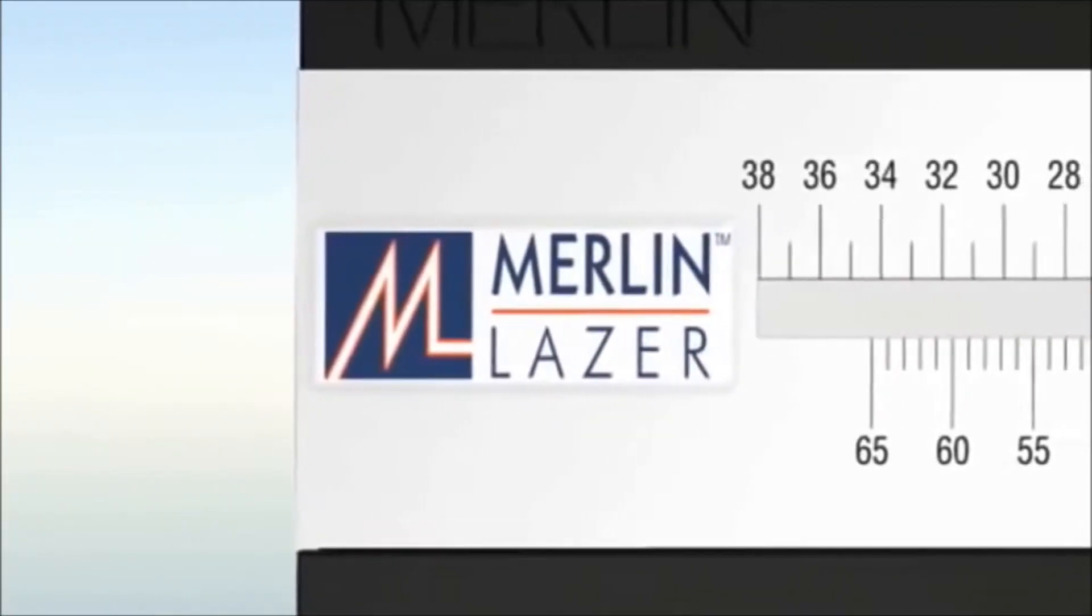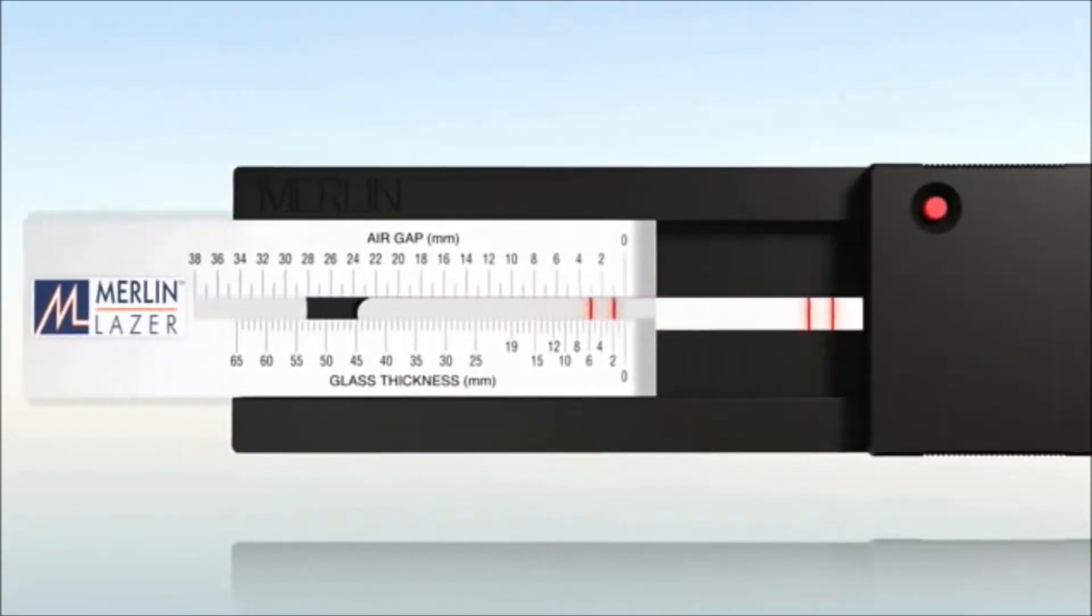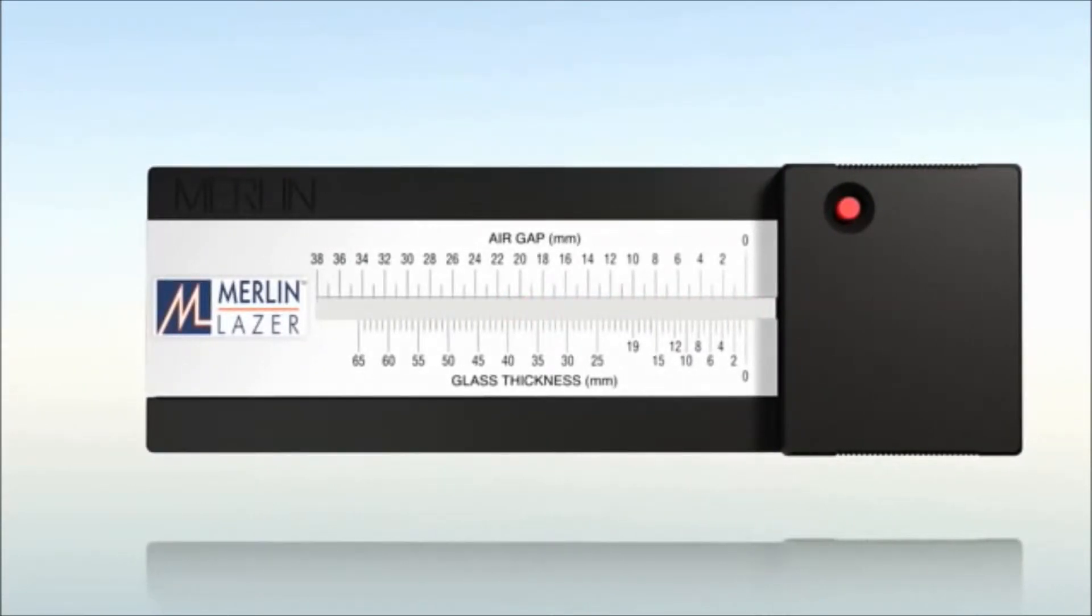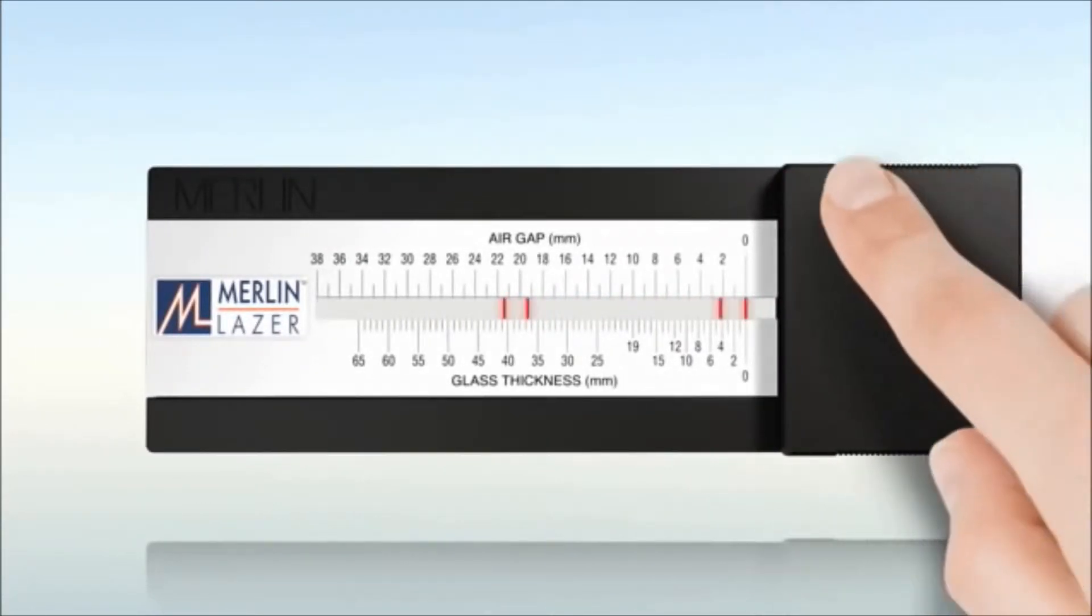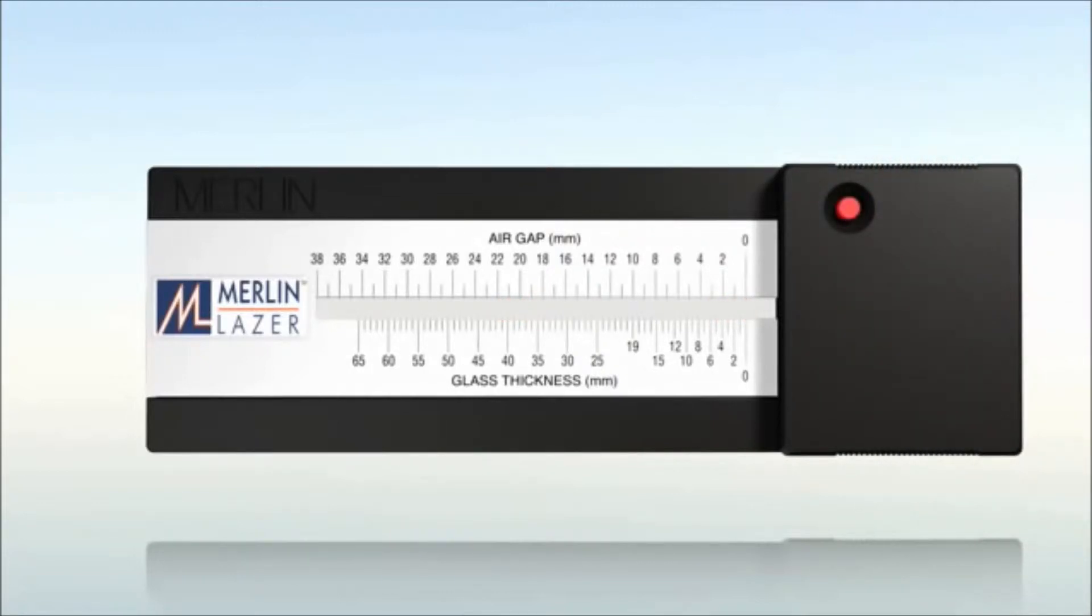With the help of the raised logo button, the scale can be moved to the left or right to set the zero to the correct position for each measurement. The unit is operated with just one button: simply press to activate the laser and when the button is released, the laser is turned off automatically to save power.